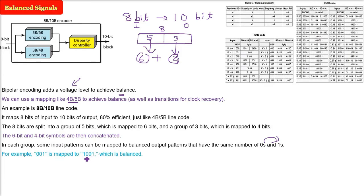For example, 0001 has two 0s and one 1, so it's not balanced. But we've mapped it in 8b/10b to 1001, which has two 0s and two 1s, so it's balanced now. That's why we're using 8b/10b for balancing.